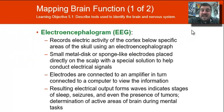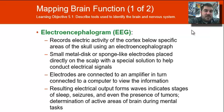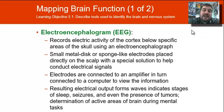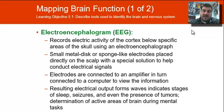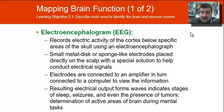There is an EEG, or electroencephalogram, where electrodes are placed on the head using small metal discs and routed to a computer so we can view the electrical activity of the brain. It can tell us the stages of sleep, seizures, tumors, and active brain areas during mental tasks. If you're doing a puzzle, part of your brain is going to be active, so this can help us study the brain.